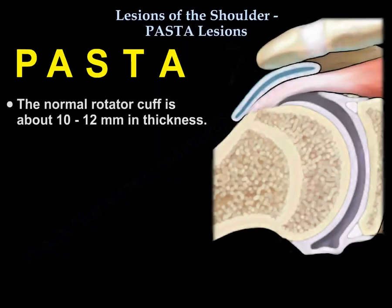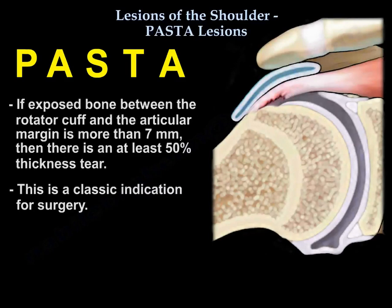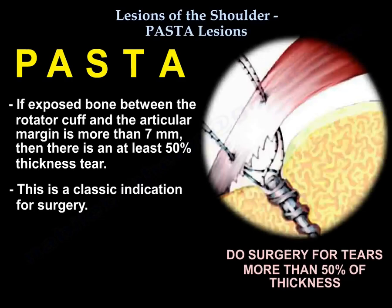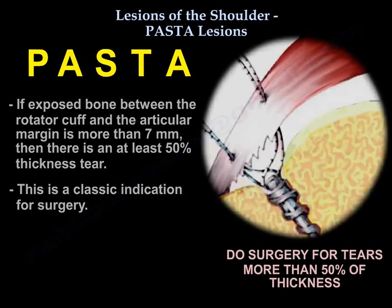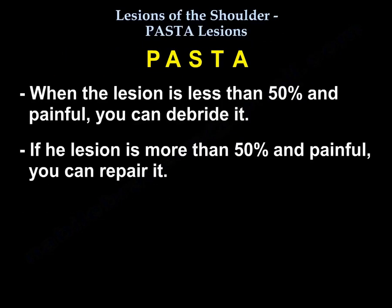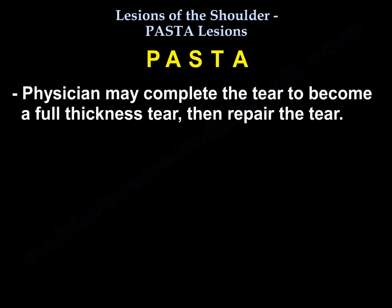The normal cuff is about 10 to 12 mm in thickness. If exposed bone between the cuff and the articular margin is more than 7 mm, then there is at least 50% thickness tear, which is a classic indication for surgery. If the lesion is less than 50% and painful, you can debride it. If the lesion is more than 50% and painful, you can repair it — or the physician may complete the tear to a full thickness tear and then repair it.